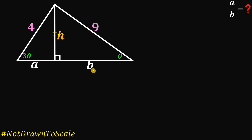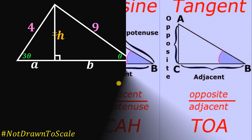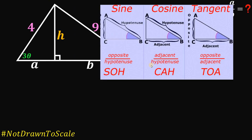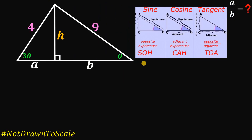Therefore, we can use what we call SOHCAHTOA. SOH means sine theta equals the opposite side over the hypotenuse, CAH means cosine theta equals the adjacent side over the hypotenuse, and TOA means tangent theta equals the opposite side over the adjacent side. We will use this concept to answer this question.